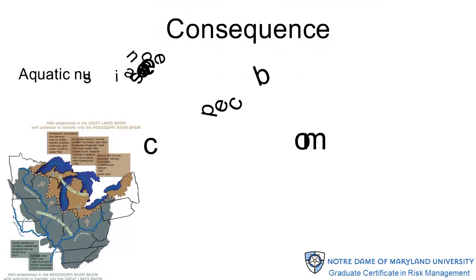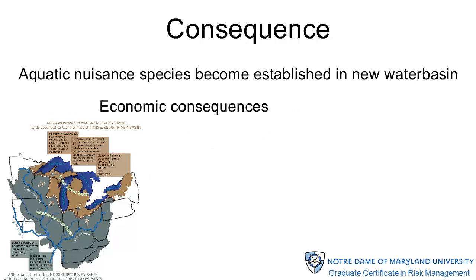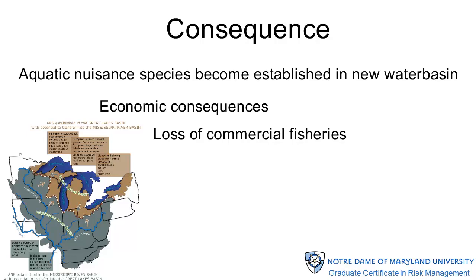Here are some examples to illustrate the range of consequences that can occur with a single risk. Aquatic nuisance species can cause a variety of consequences of concern. Economic consequences can occur, but it's not sufficient to identify consequences in such a broad way. To use the generic process properly, you must identify the specific harms that could occur. Here we suggest this could be the loss of commercial fisheries. Even that is not sufficient — at some point in the risk assessment, you'll need to say which specific species are at risk of loss. Within a category of consequences, there may be more than one consequence.